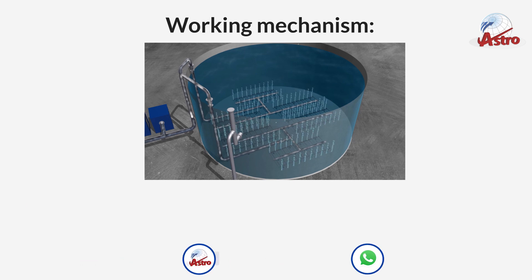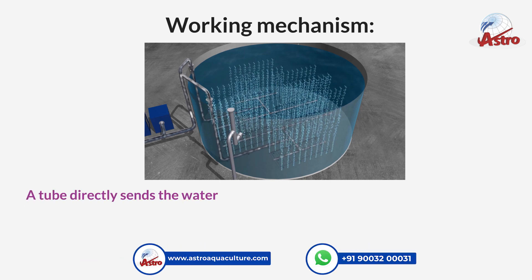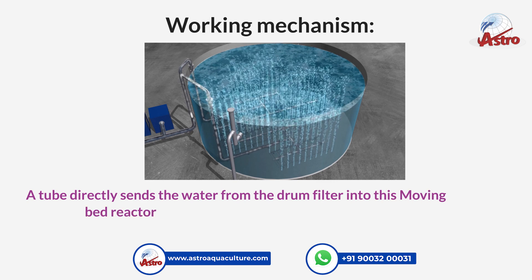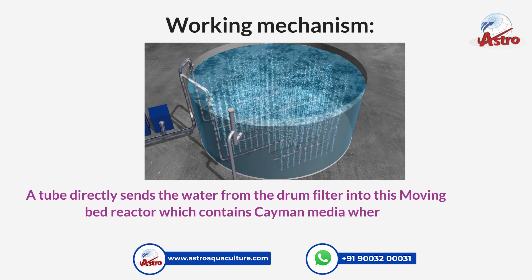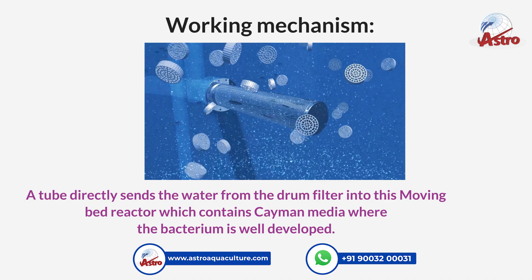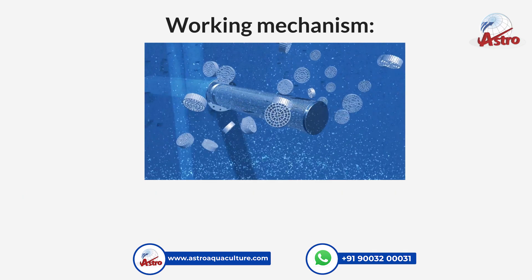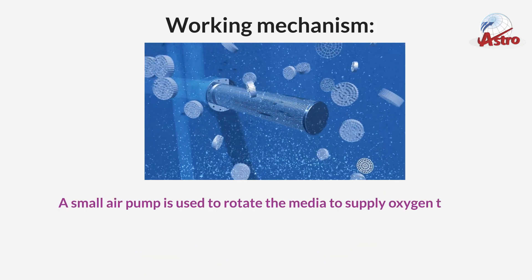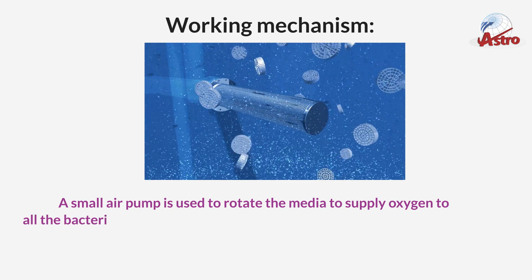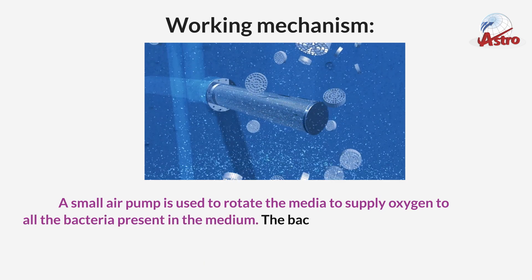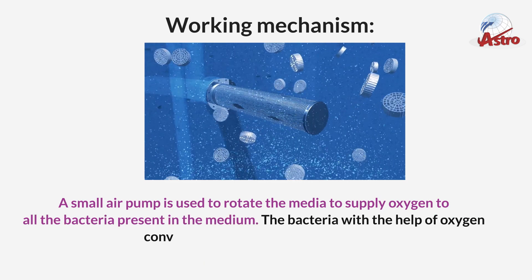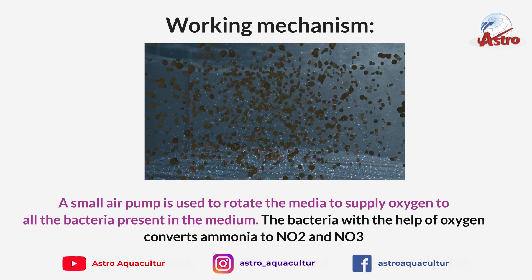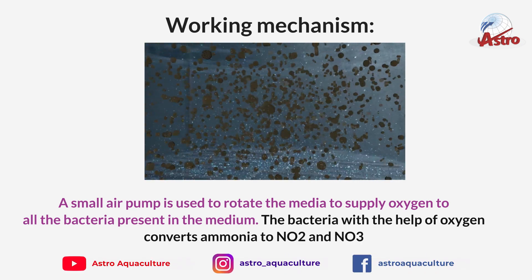Working mechanism: a tube directly sends the water from the drum filter into this moving bed reactor, which contains caiman media where the bacteria are well developed. A small air pump is used to rotate the media and supply oxygen to all the bacteria present in the medium. The bacteria, with the help of oxygen, convert ammonia to NO2 and NO3.